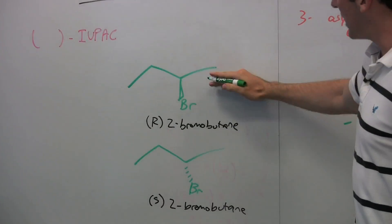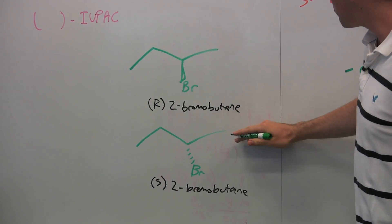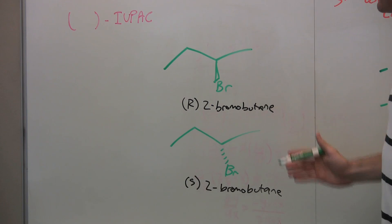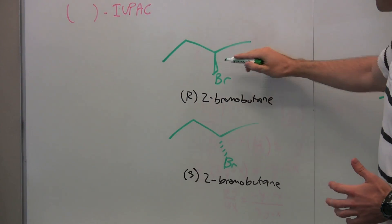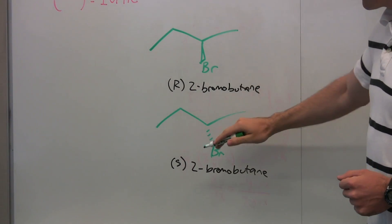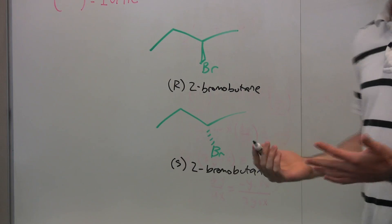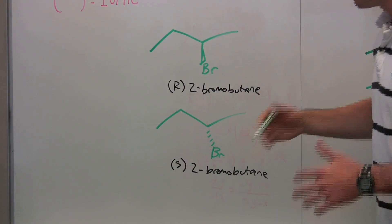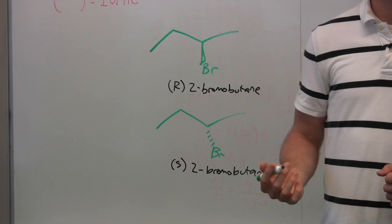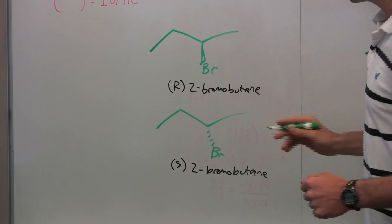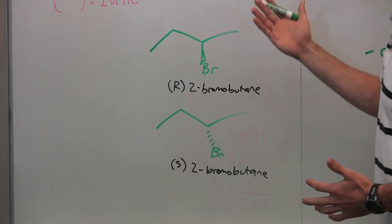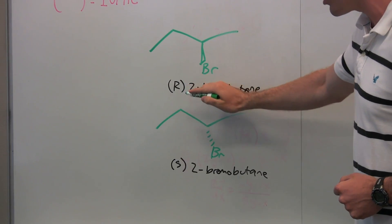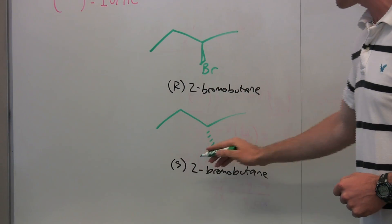We have two molecules that have the same connectivity, they have the same main name — 2-bromobutane — but the only difference is that there is a bromine here being wedged and a bromine there being dashed. The only difference is the different spatial arrangements at that point. This point is a stereocite; it's actually an asymmetric tetrahedral carbon, one of the three types of stereosites, and that's what causes these to actually be different molecules. The distinction is that this is called an R stereo label and this is an S stereo label.